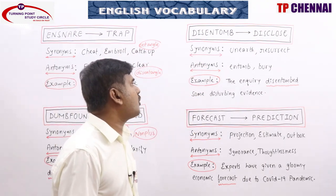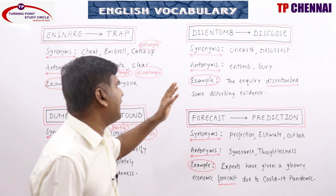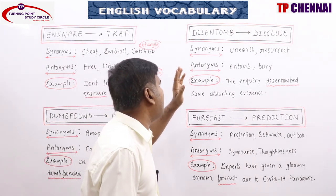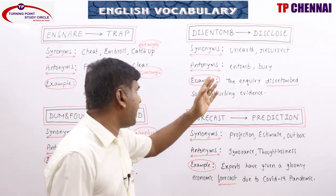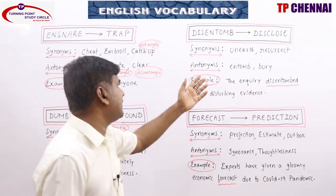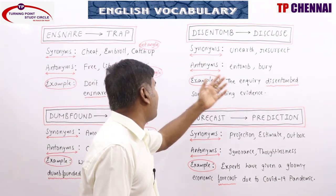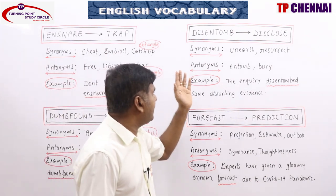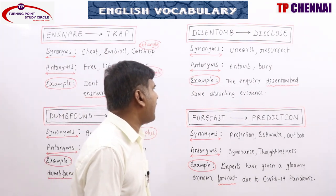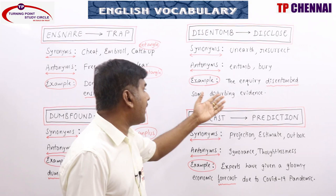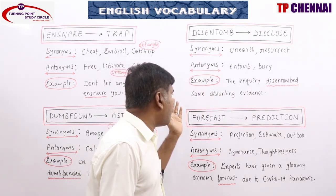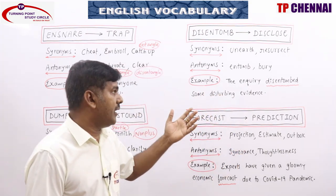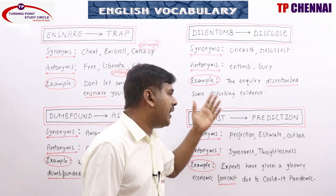Disentomb means disclose, to take out, dig out, dig up, reveal, bring to light, bring to surface, unearth, resurrect, root out, uncover. Antonyms: entomb, bury. Example: The inquiry disentombed some disturbing evidence — it unearthed and took out some disturbing evidence.